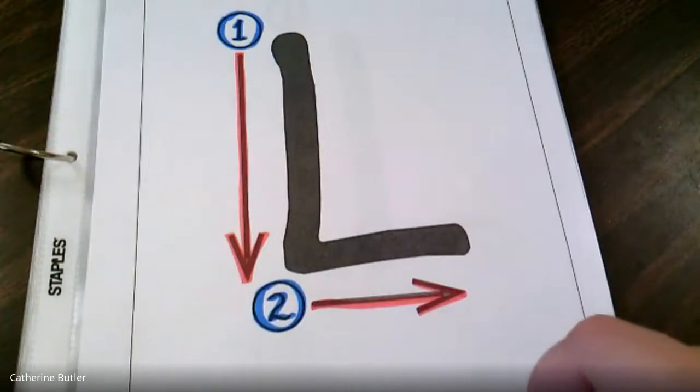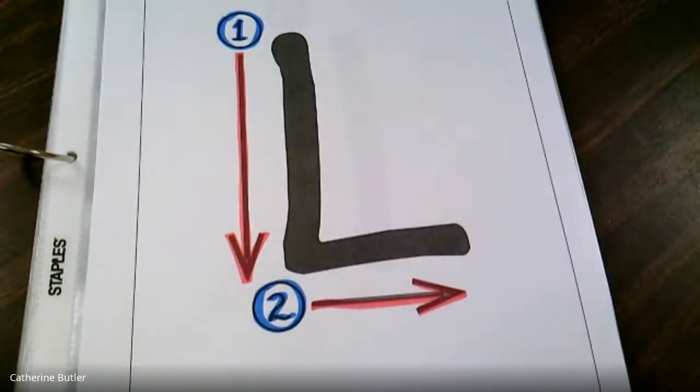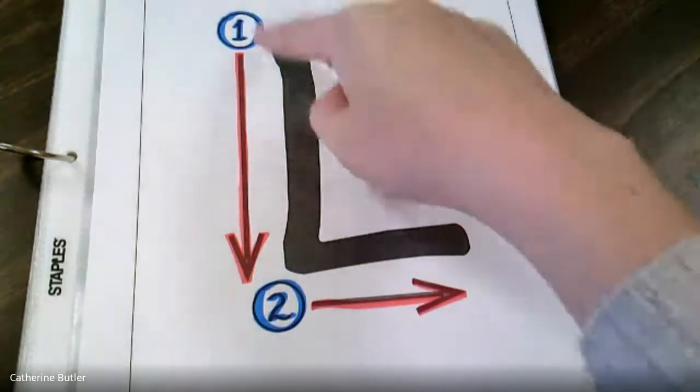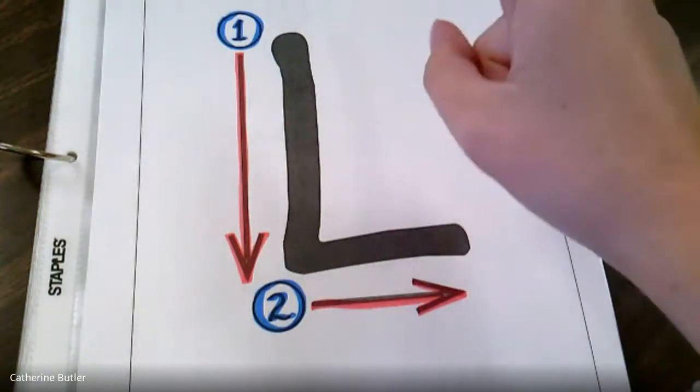So we're going to practice writing our letter L. First notice our steps. Oh, we only have two steps today. Are you looking at the directions of those arrows? Are they going up or down, across? Great noticing.